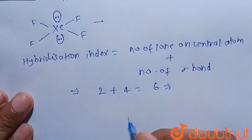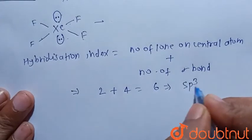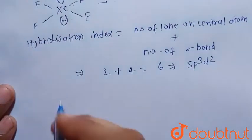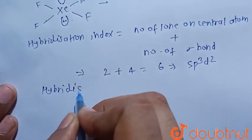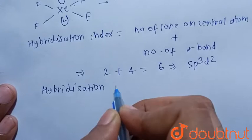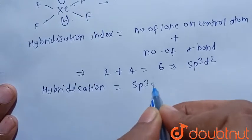Six hybridization index means its hybridization is sp3d2. So hybridization of the given molecule, xenon tetrafluoride, is sp3d2.